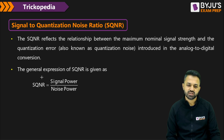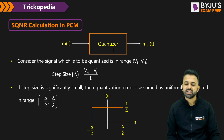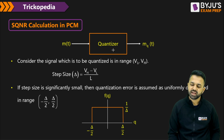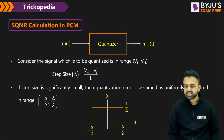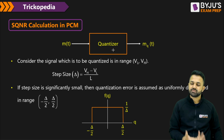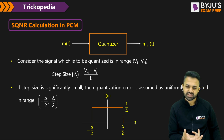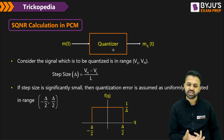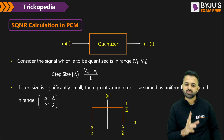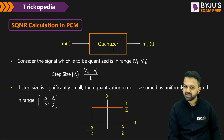The signal to quantization noise ratio is signal power divided by noise power. If we give a message signal as input with the lowest amplitude VL and highest amplitude VH, then we can calculate the step size as VH minus VL divided by L.